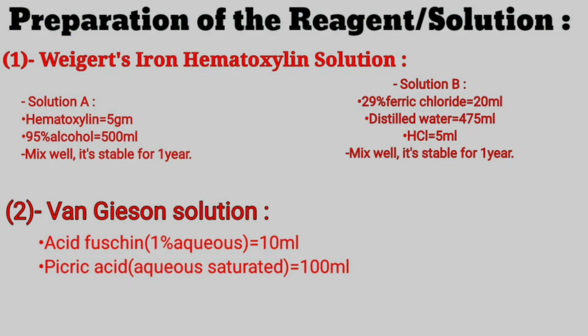Solution B is also stable for up to 1 year. To make Weigert's iron hematoxylin, after preparing Solution A and Solution B, mix both together — the Weigert's iron hematoxylin solution is ready.